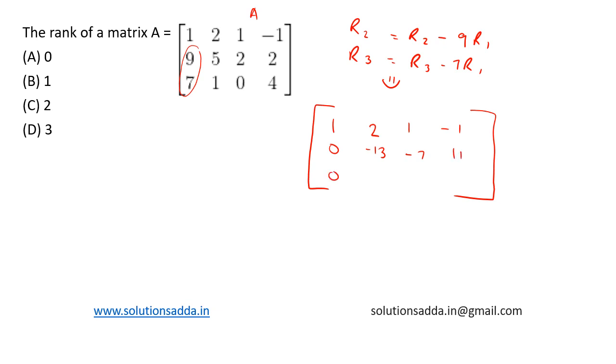Now eliminate the elements in the second column under the second element. That is, we are trying to eliminate this. For this we perform R3 equals R3 minus R2. Performing this we will get this.